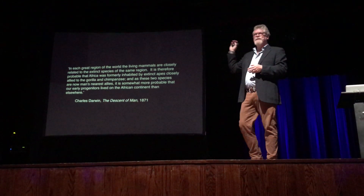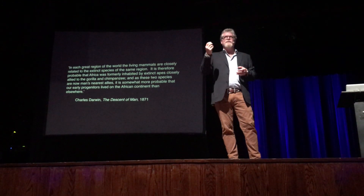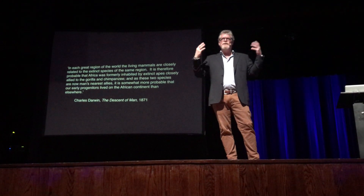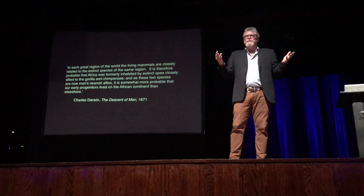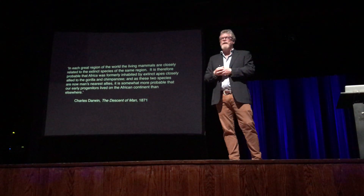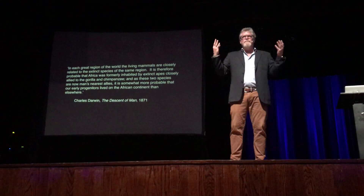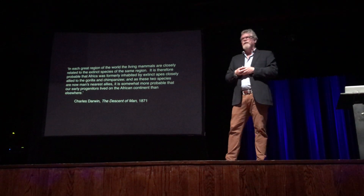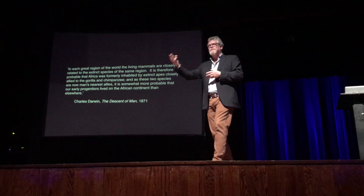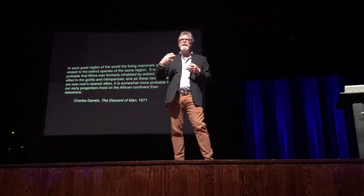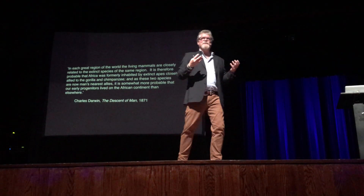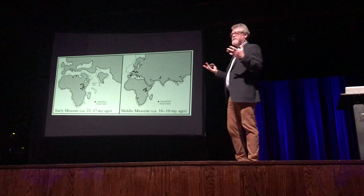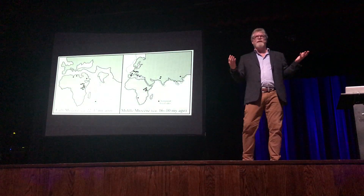Darwin wrote about the similarities between humans and our closest relatives, chimpanzees and gorillas, in Africa. He suggested, based on variable evidence — there was no fossil record to speak of back then — that based on these broad morphological similarities in body shape, because chimpanzees and gorillas lived in Africa, maybe our ancestors came from there as well. And it turns out that Darwin was absolutely right, even though he had no evidence at the time.